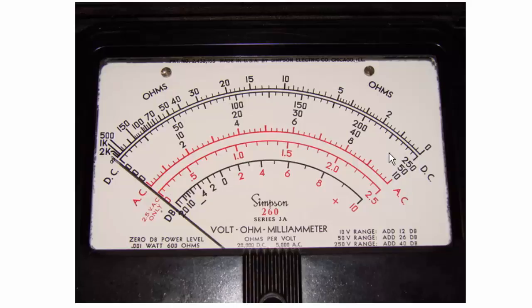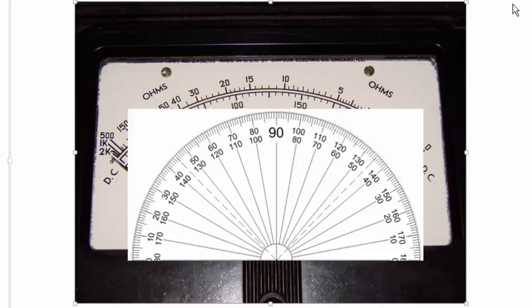Well there is an easy way to find that out. If you took a protractor and laid it on the meter face you can easily measure the angle from this end of the scale over to this end of the scale.